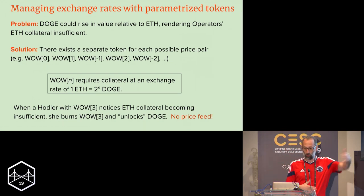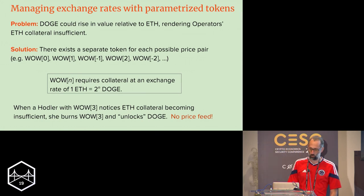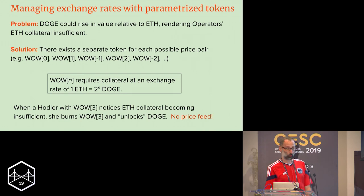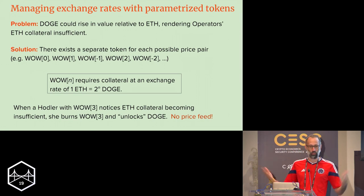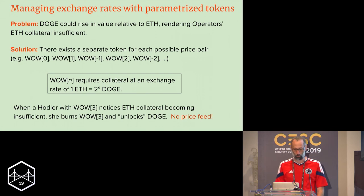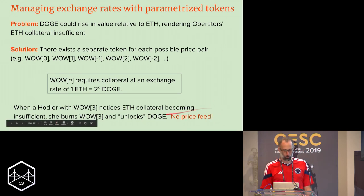If the collateral is too small, then the Doge could just walk off. The solution is to create a separate Wow token for each possible price pair — Wow-zero, Wow-one, Wow-two — so that Wow-N requires collateral at an exchange rate of one ETH equal to 2^N Doge. When a hodler with Wow-3 notices the ETH collateral becoming insufficient, it's her responsibility to burn the Wow-3 and unlock the Doge. There's no price feed here — it's whatever that hodler believes the price is.